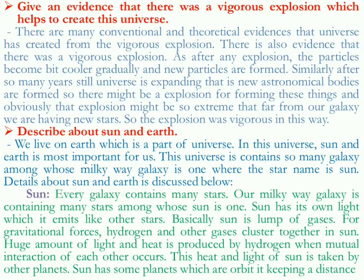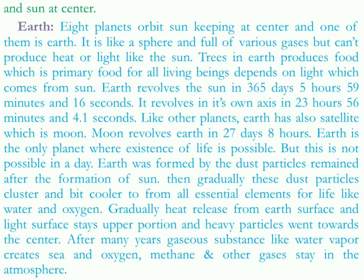The sun has some planets which orbit it, keeping a distance, with the sun at the center. Other planets orbit the sun keeping a fixed distance, but all the orbits are not the same — they have different distances. There are eight planets of the sun, and one of them is our earth. Earth is like a sphere, full of various gases, but it cannot produce heat or light like the sun — that is why earth is a planet, not a star. Trees on earth produce food, which is the primary or basic food for all living beings, and that food production depends on sunlight from the sun.